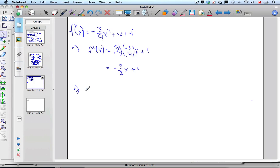B part then says, find the equation of the normal at positive 2, 3.